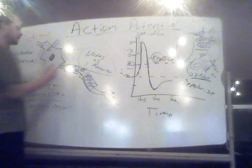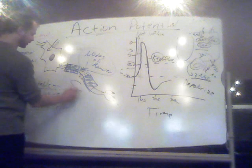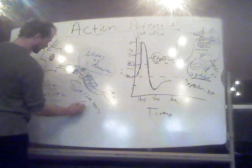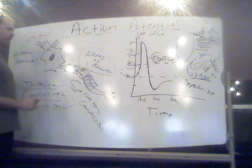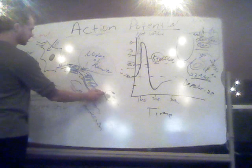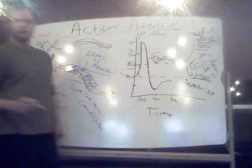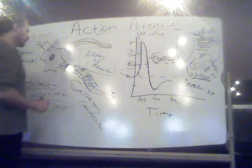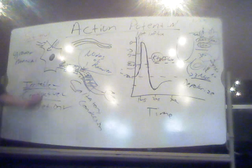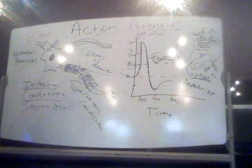As a result, myelin increases conduction velocity. And there's a word for this — it's called saltatory conduction. It's called saltatory conduction because it's going to look like the action potential is actually jumping from node to node to node, versus a bare axon where it's like a current traveling down the length of a wire. Myelin can make an axon send a potential thousands of times faster than an unmyelinated axon.